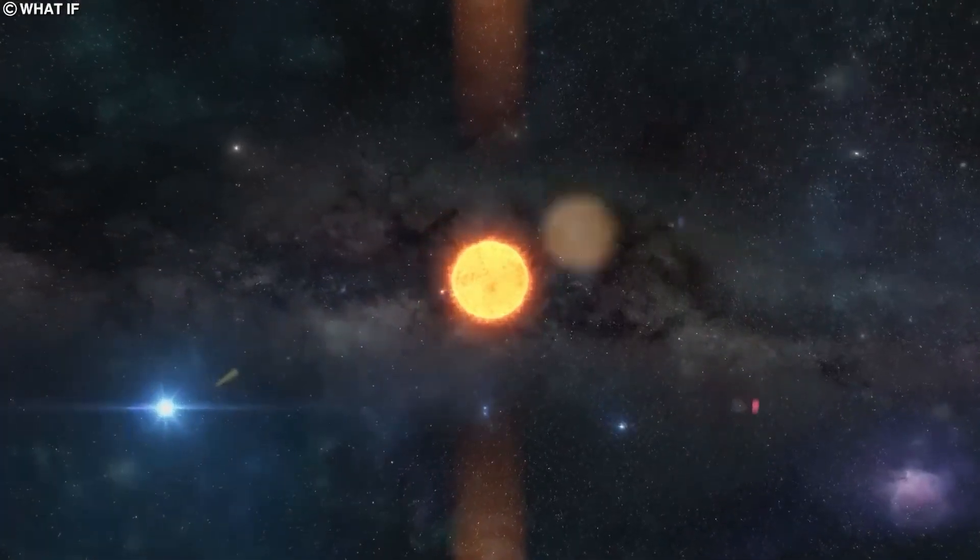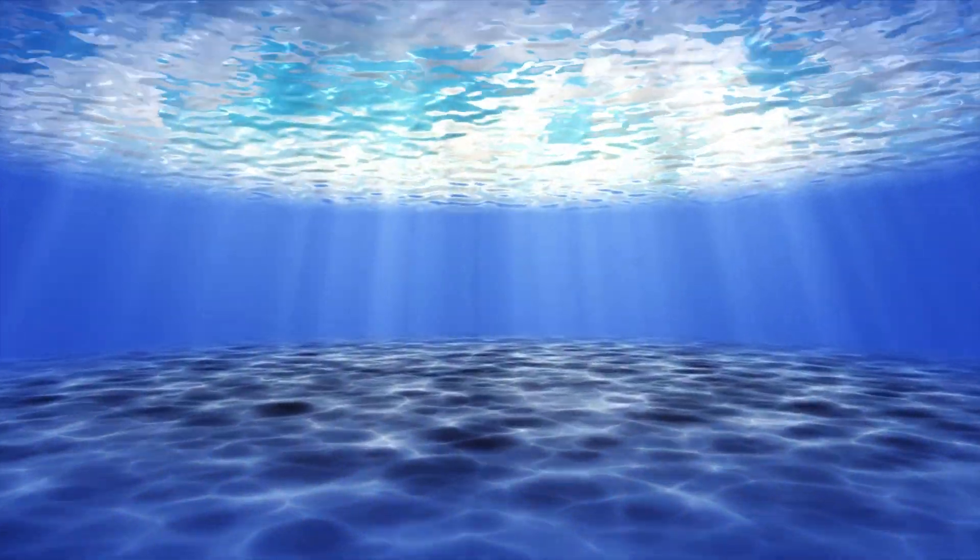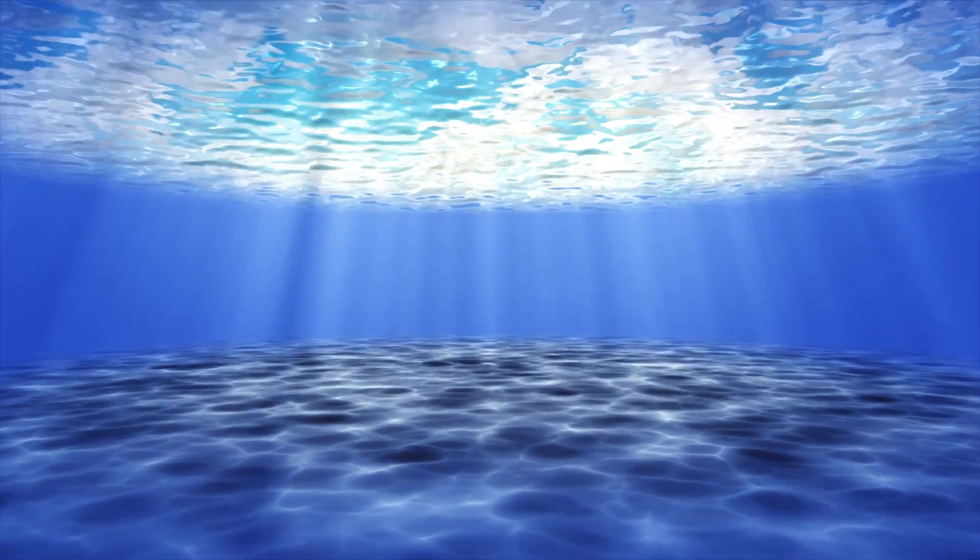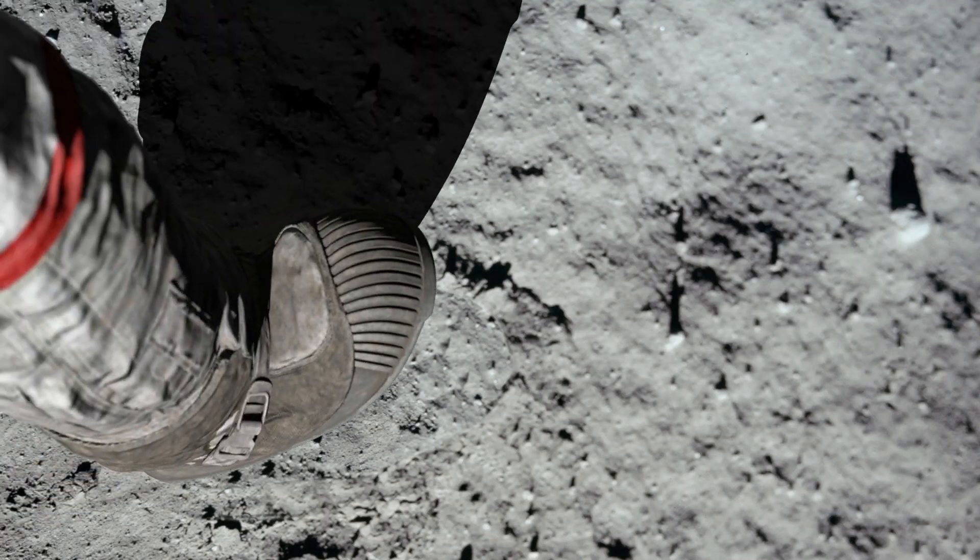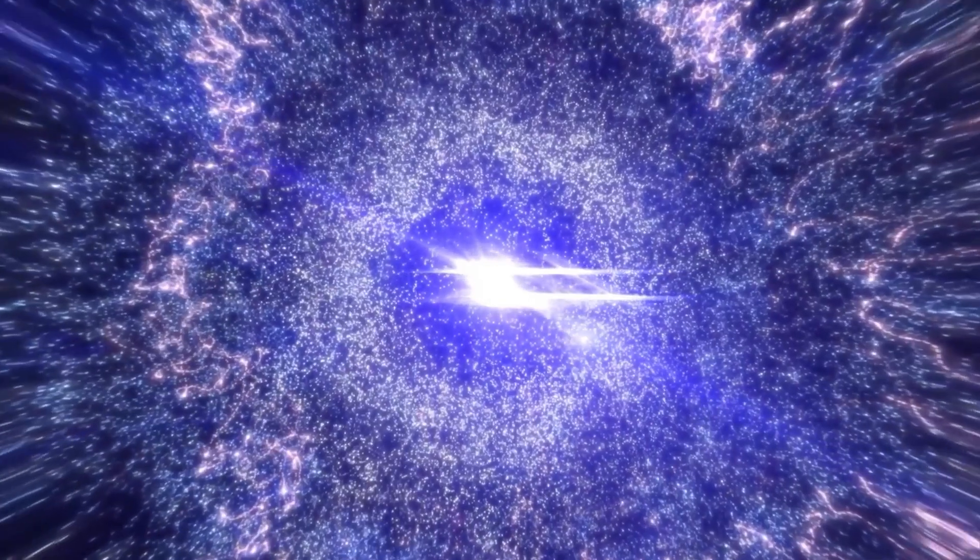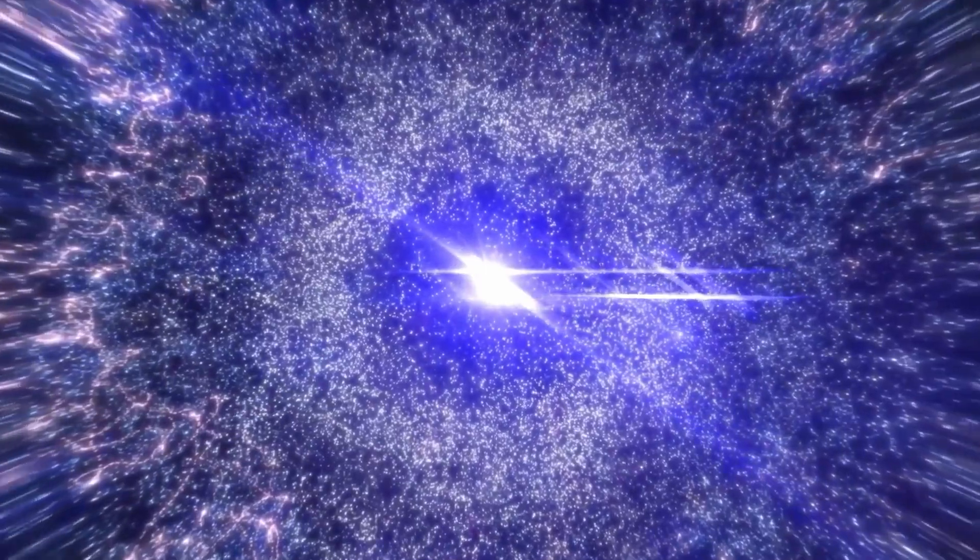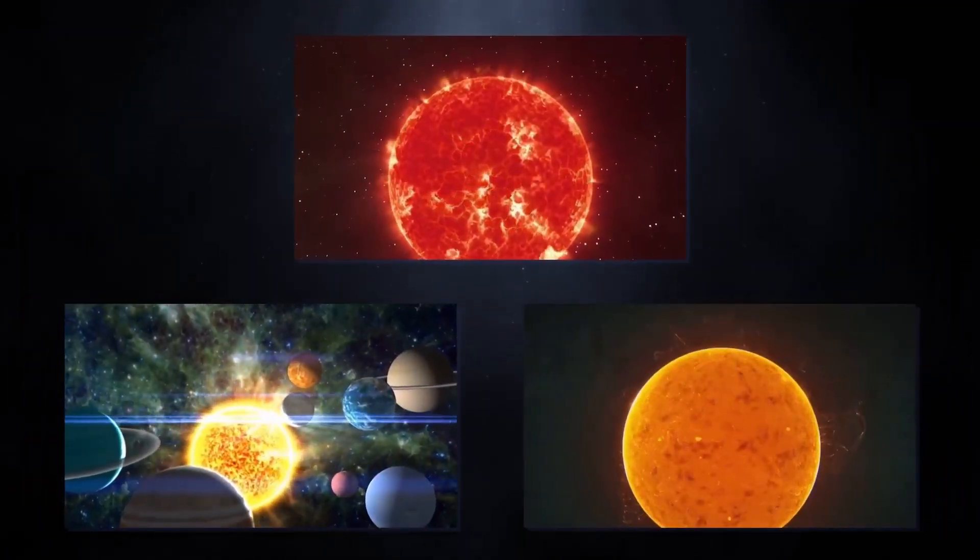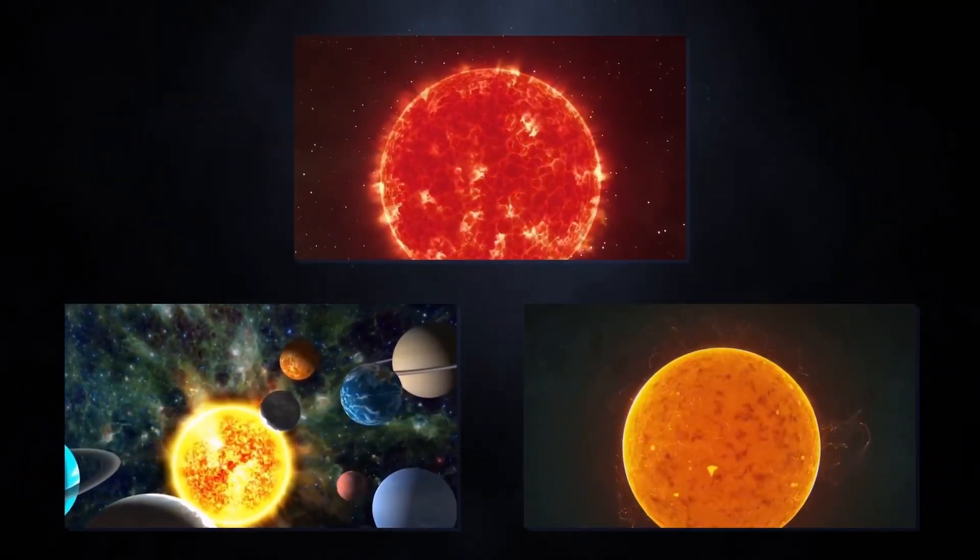A supernova explosion would also create radioactive iron. We've actually found traces of this cosmic substance on Earth's seabed and even on the moon. It's believed to have formed in a supernova explosion that occurred between two and three million years ago, about 300 light years away from us. So, while it left its mark, it didn't cause any major problems for life on Earth.